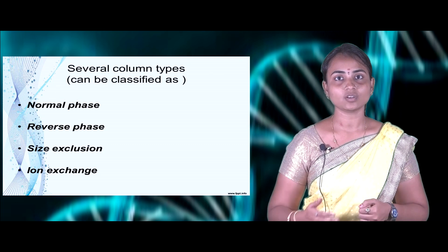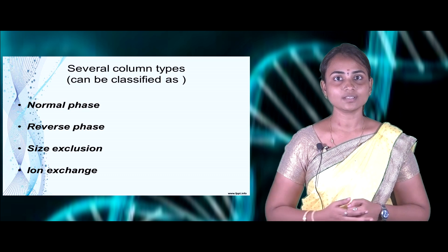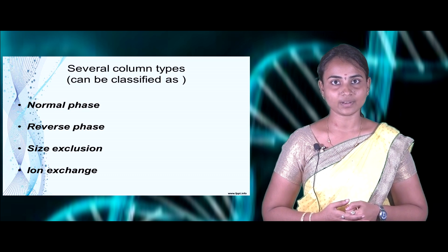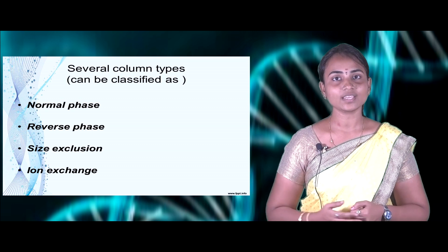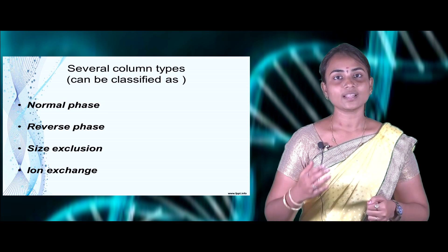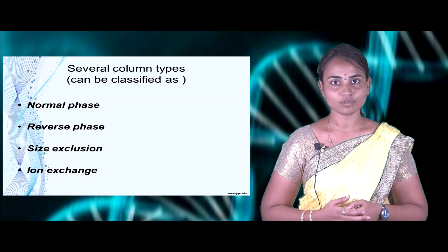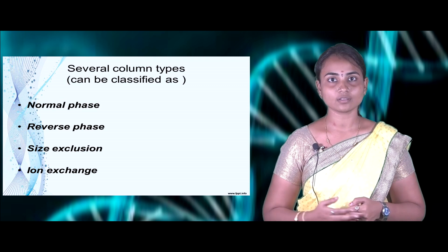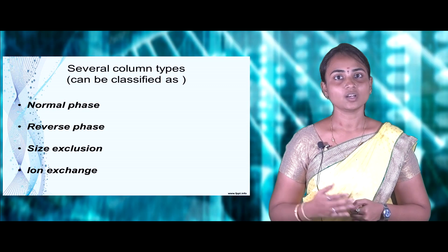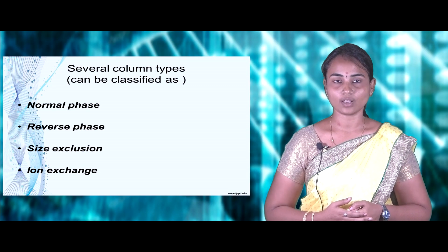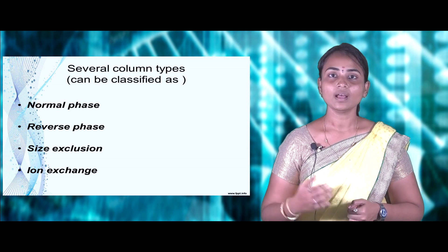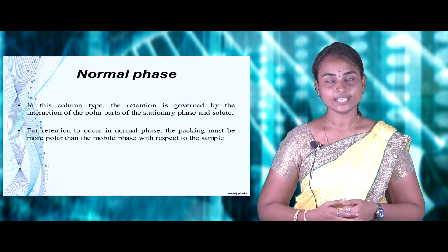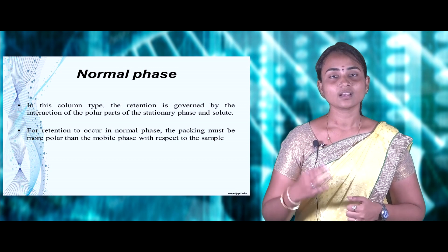Based on the different solvents used and the different affinity types of compounds to be separated, different columns can be used. The types of columns based on their polarity and affinity include normal phase column, reverse phase column, size exclusion column, and ion exchange column.